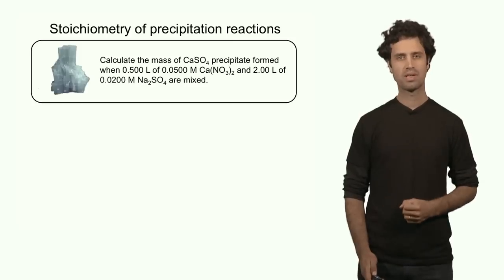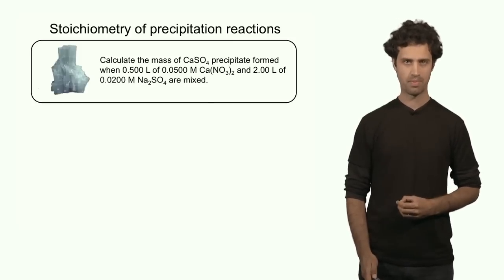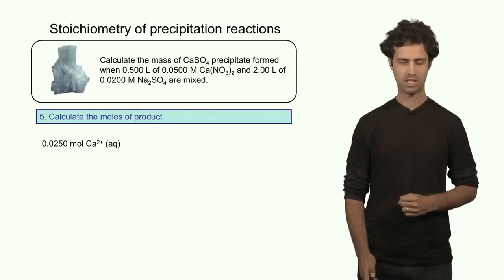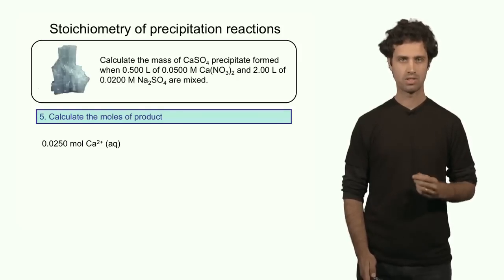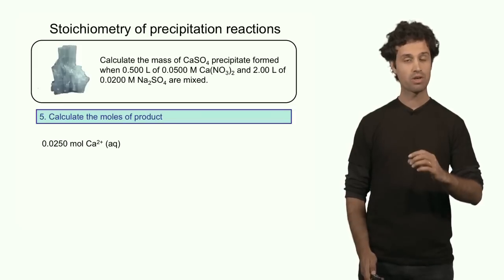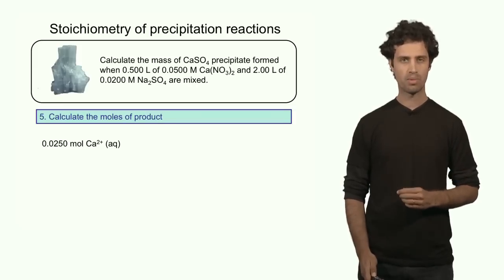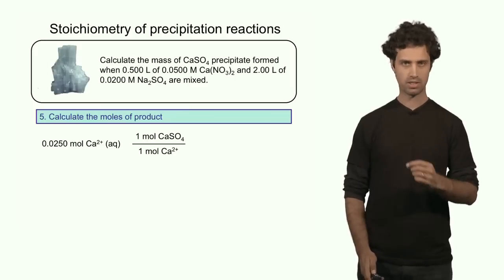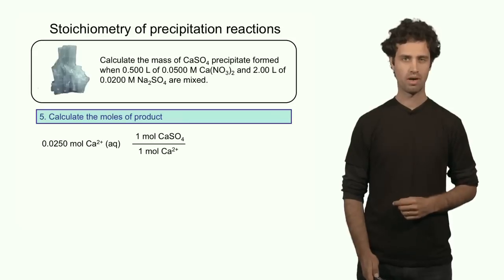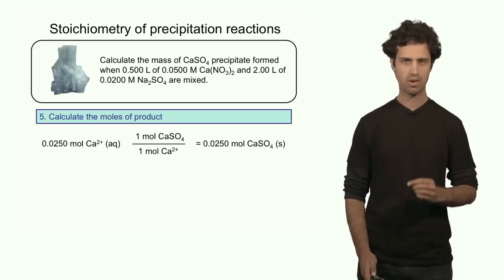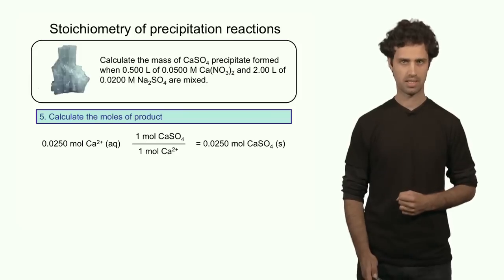To determine how much precipitate forms, I take the number of moles of the limiting reagent — calcium — which is 0.025 moles, and convert it to moles of precipitate through the mol ratio: 1 mol of calcium sulfate per 1 mol of calcium. That means I form 0.025 moles of calcium sulfate precipitate.